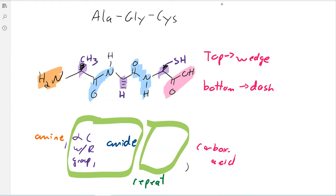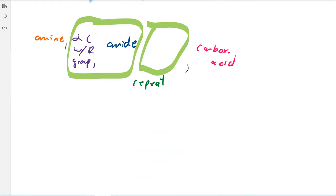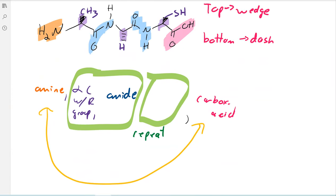So just get used to kind of drawing polypeptides. This will obviously be some kind of question on the exam or whatnot. And then one thing to kind of note here is note that both the amine and the carboxylic acid only show up at the ends. It's the amides that show up in the middle. So we'll just say only show up on ends. And the rest are converted to amides.